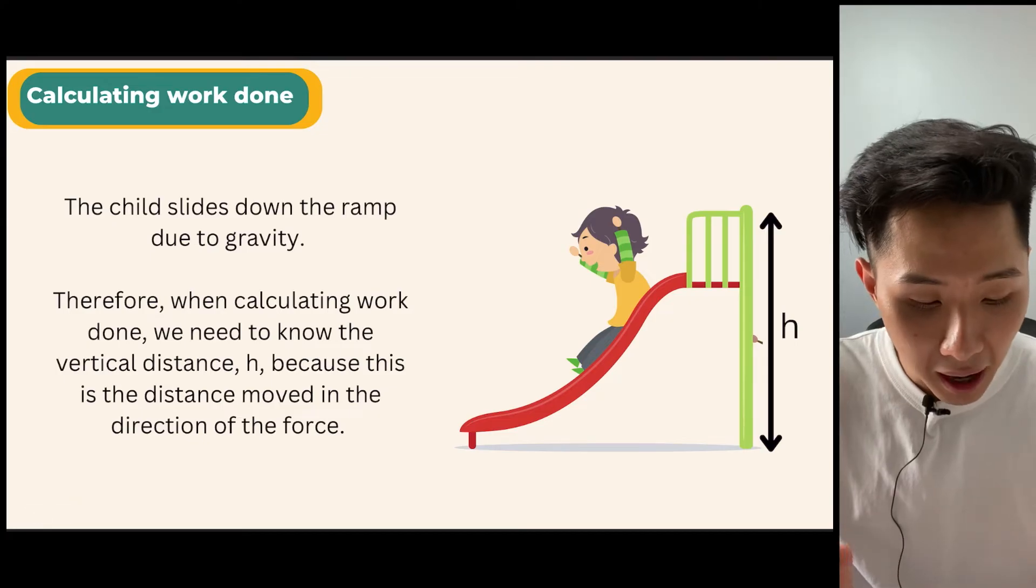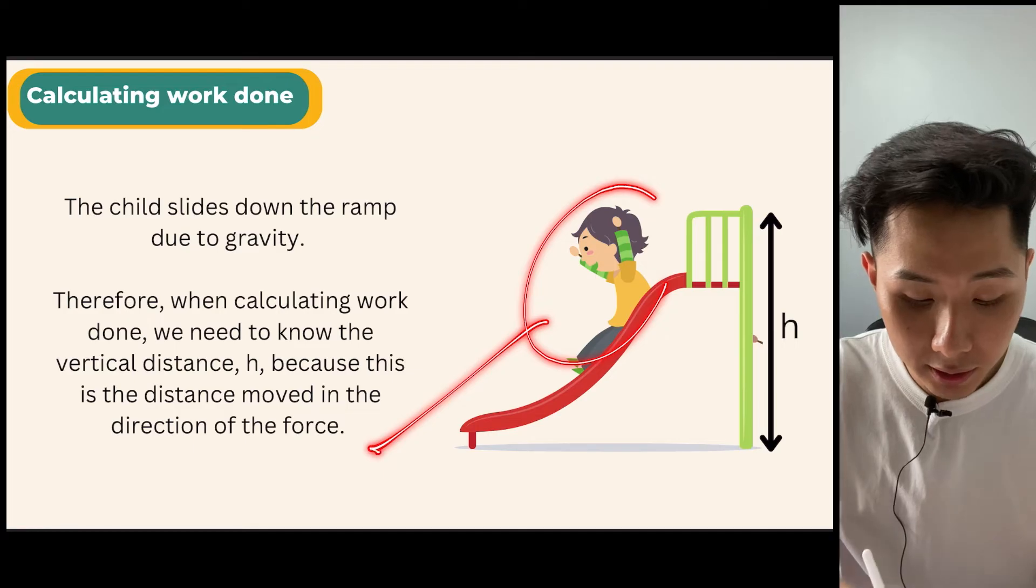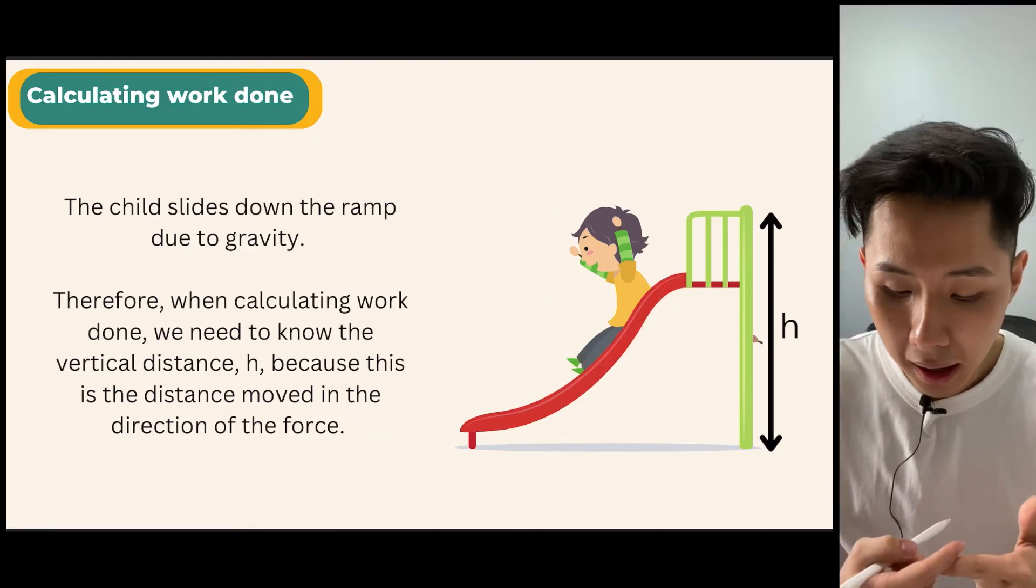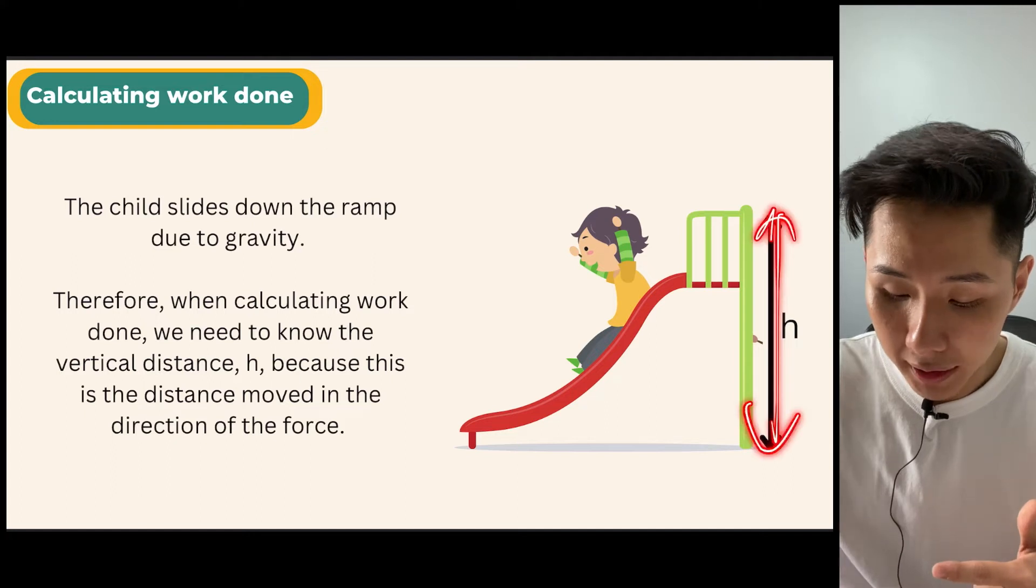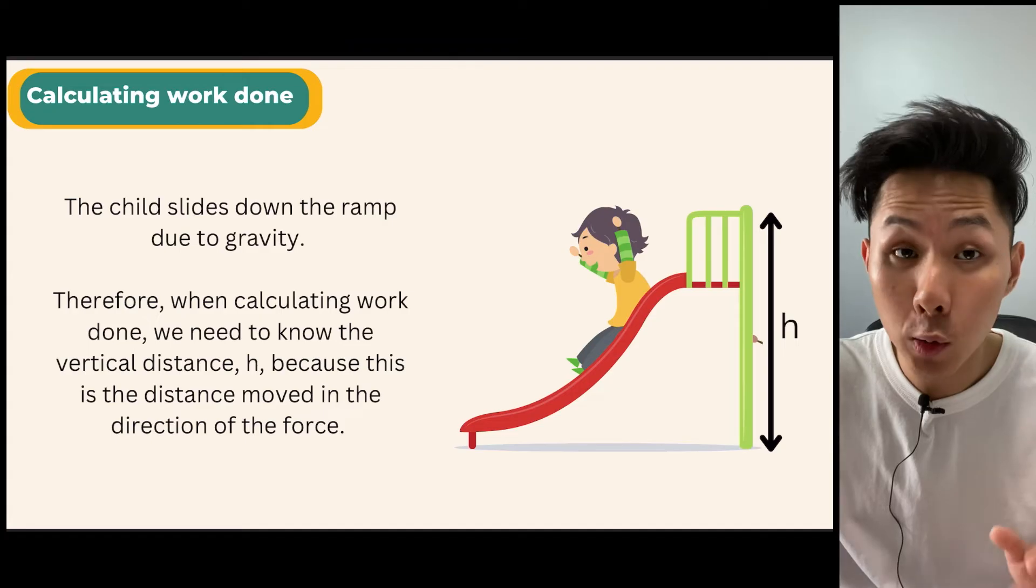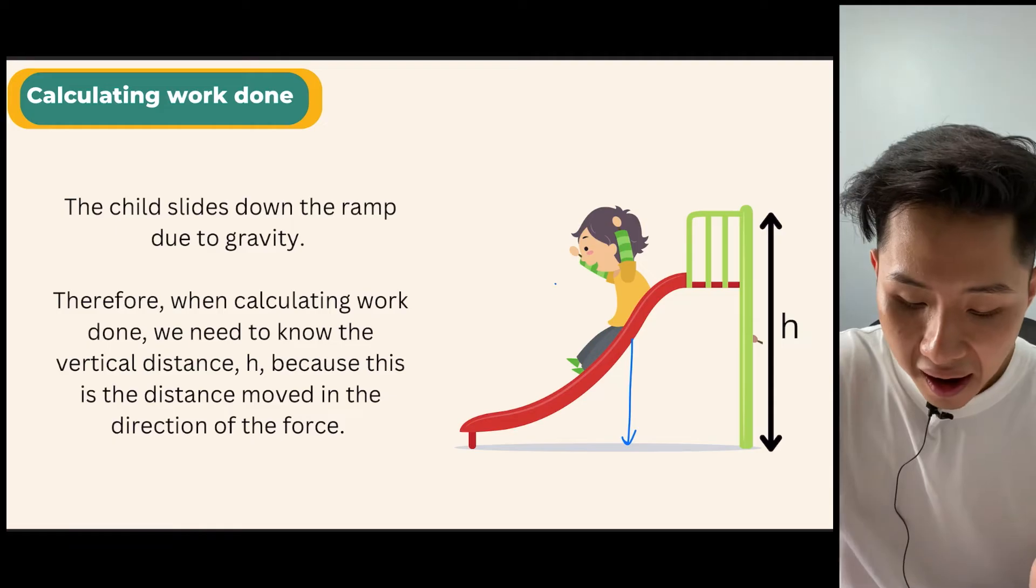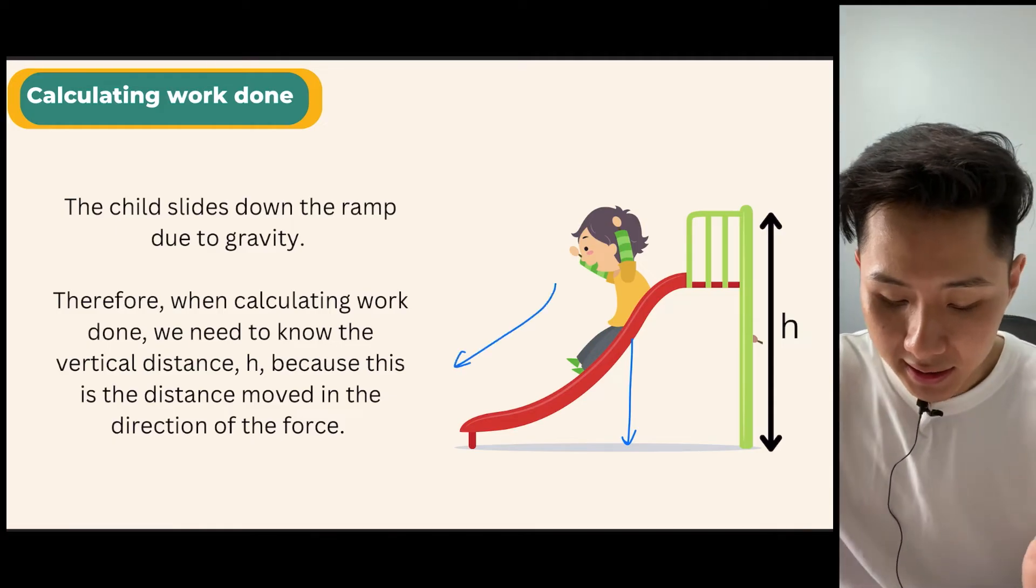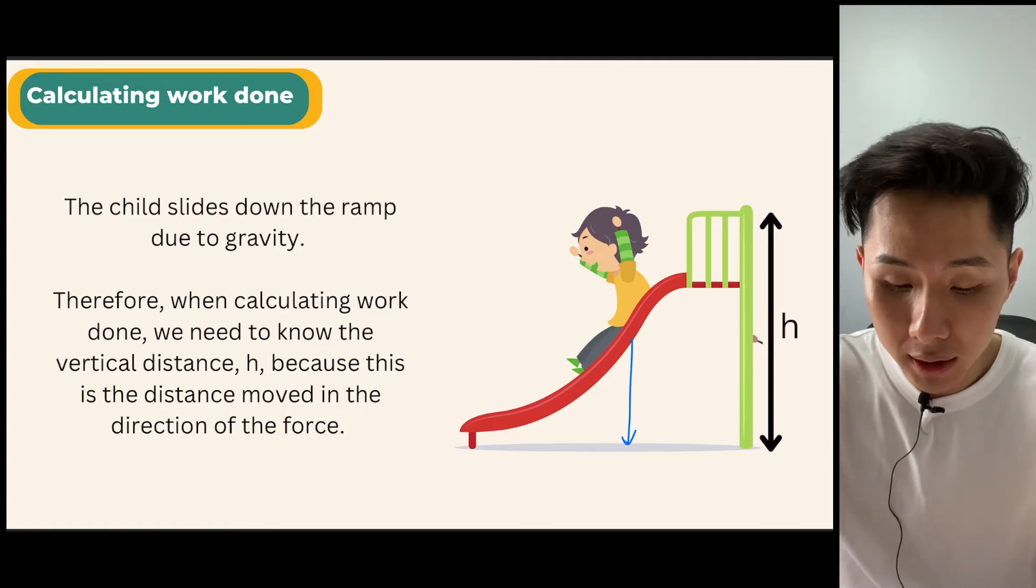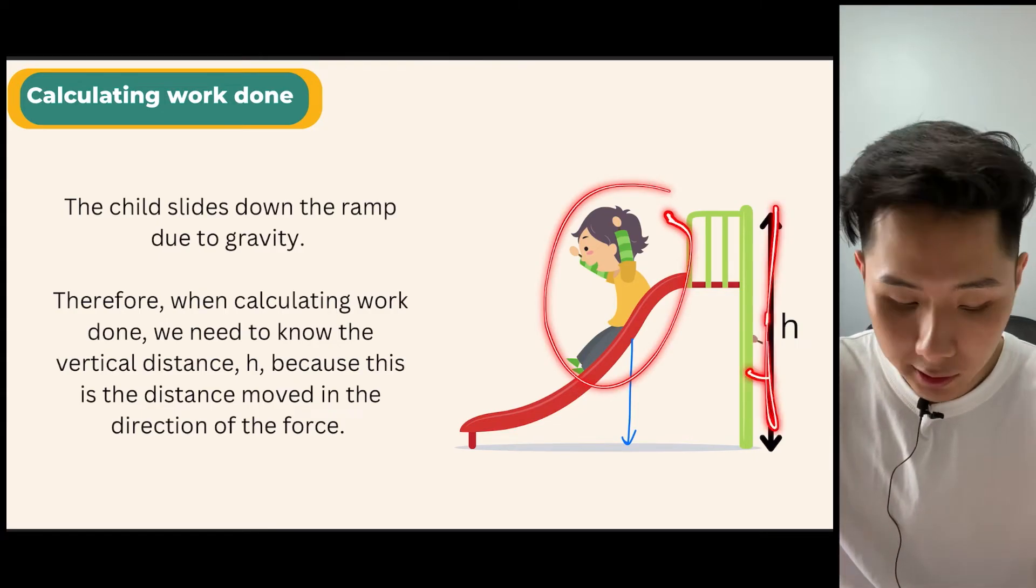So next up, to just give you more examples of how work is done. So this child is sliding down the ramp. And in order to calculate the work done, we need to use the vertical height here. Because why? For now, the boy is sliding down due to gravity. And gravity acts in vertical position instead of in a sliding position. So when you consider the work done of this kid here, done by gravity, we need to consider the vertical height.